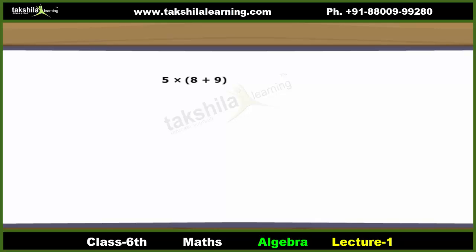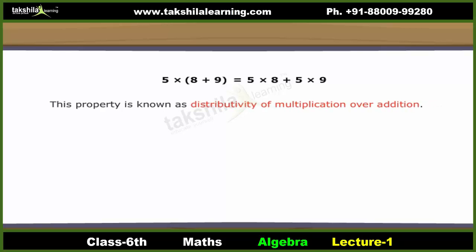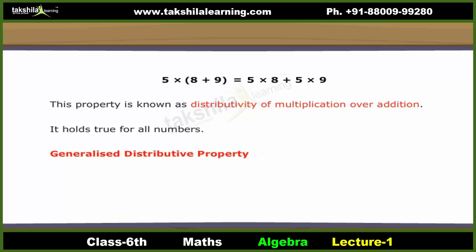Distributive property: Look at this expression: 5 into (8 plus 9). It can also be written as 5 into 8 plus 5 into 9. This property is known as distributivity of multiplication over addition. It holds true for all numbers. We can therefore generalize it with variables as: (a plus b) into c equals a into c plus b into c.